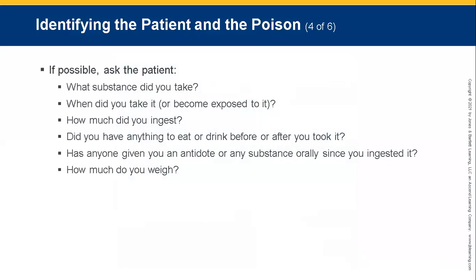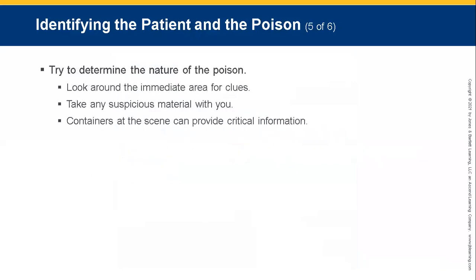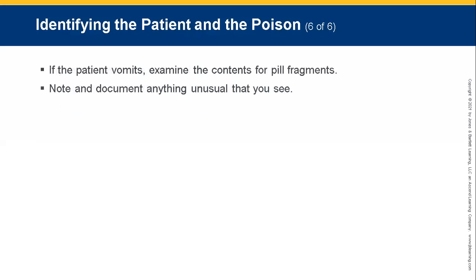If possible, ask the patient: What substance did you take? When did you take it or become exposed to it? How much did you ingest? Did you have anything to eat or drink before or after? Has anyone given you an antidote or any substance orally since you ingested it? How much do you weigh? Try to determine the nature of the poison — look around the immediate area for clues, take any suspicious material with you, and examine containers at the scene for critical information. If the patient vomits, examine the contents for pill fragments and document anything unusual.